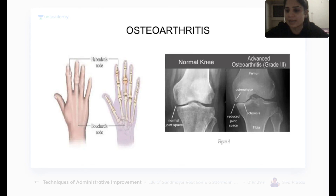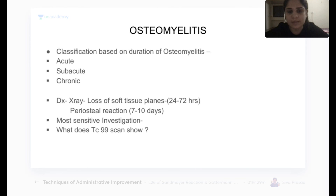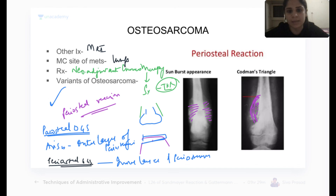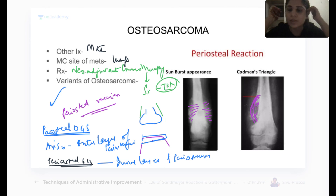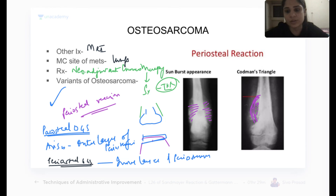We will see each other in the next class at 8:15 PM after a 15-minute break, covering osteoarthritis, rheumatoid arthritis, and more. Tomorrow's radiology revision will include x-rays, CT scans, USG and previous FMG questions. The PDF with annotations will be available for download at the end of class. Classes tomorrow will be at 11 AM and 1 PM.